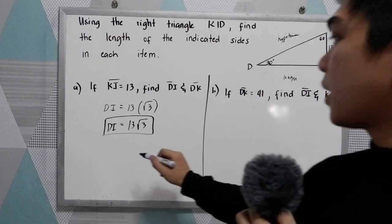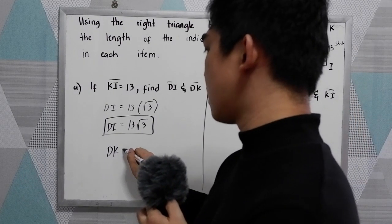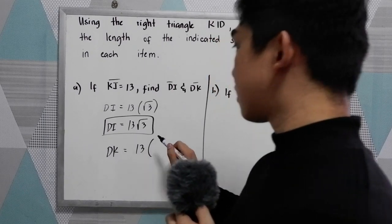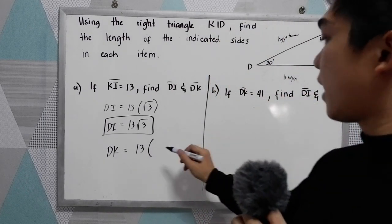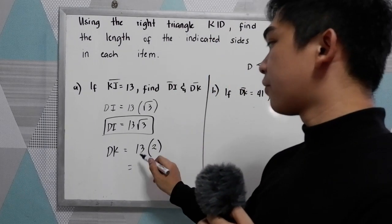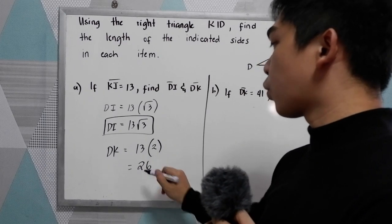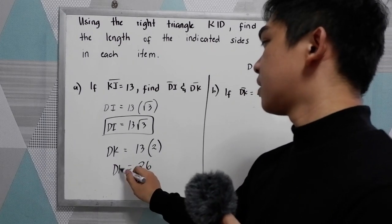Find DK, the hypotenuse. So DK is twice the shorter leg. So twice. So we have 13 times 2. We have 26. That is DK.